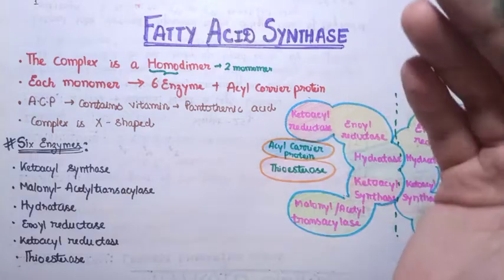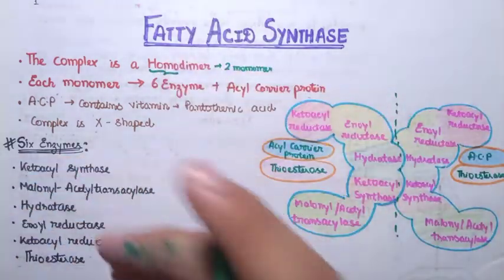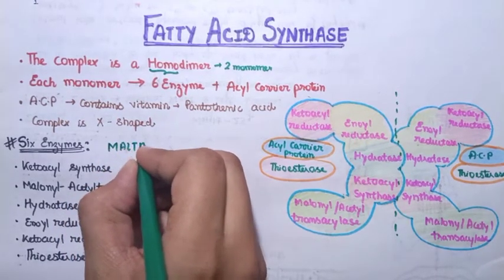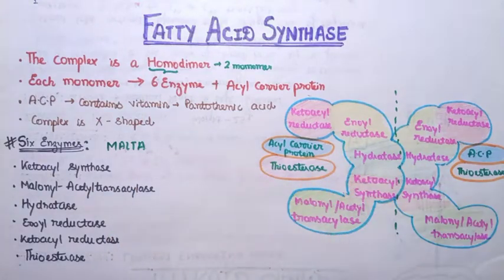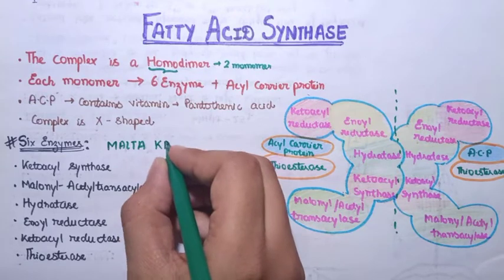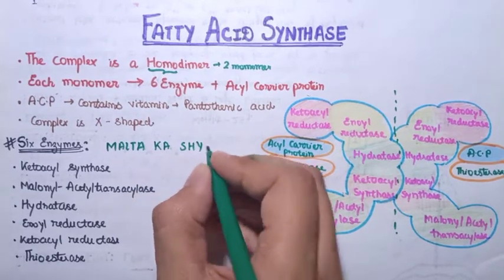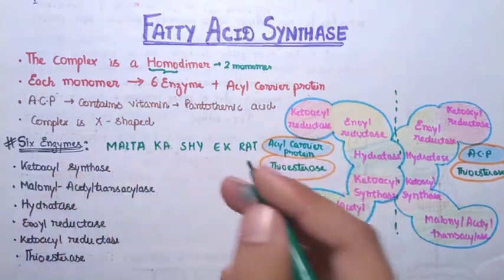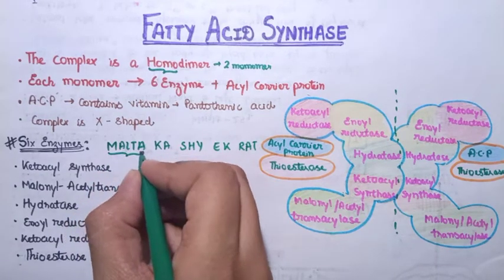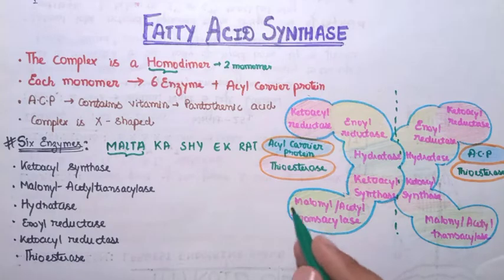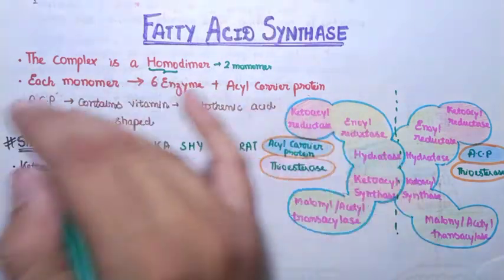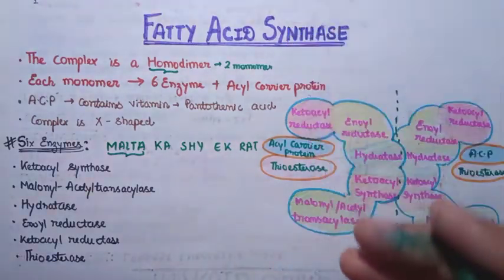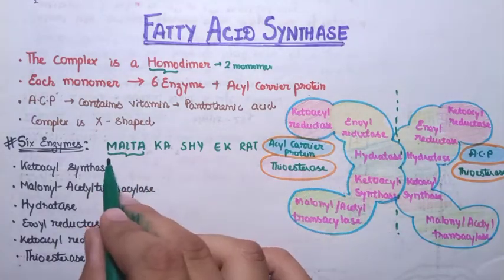Now let's see the trick to remember all six enzymes — it's quite tricky for everyone to remember all the enzyme names. The trick is: 'Malta ka shy akrat.' Malta is the name of a girl, and malta has a shy rat — or you can say 'malta ka shy akrat.' Keep this mnemonic in mind as we work through the diagram from the bottom upward.